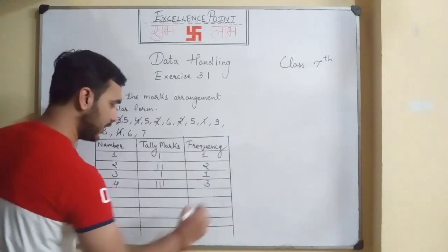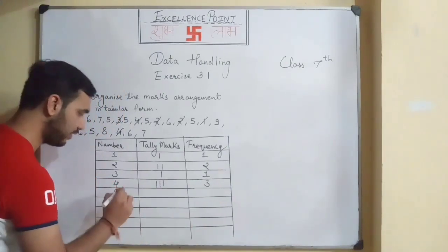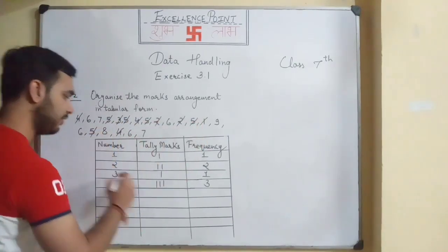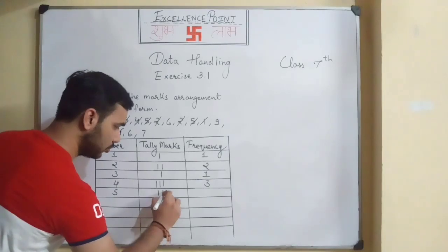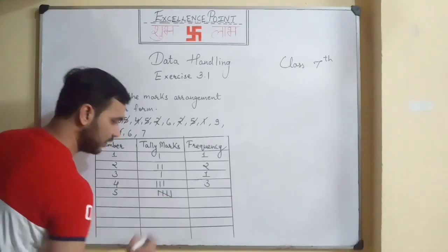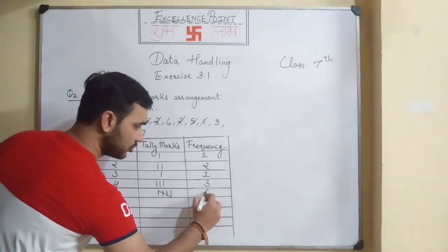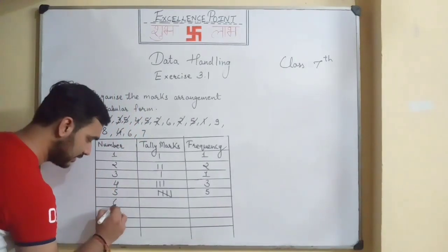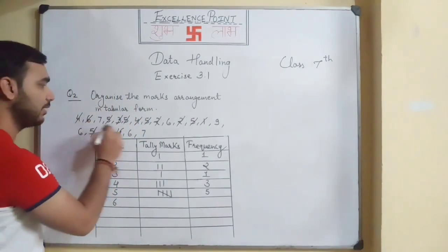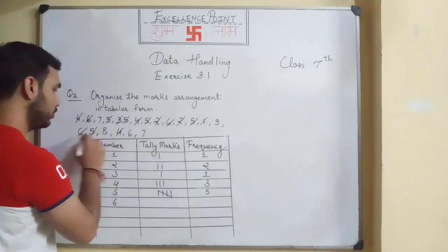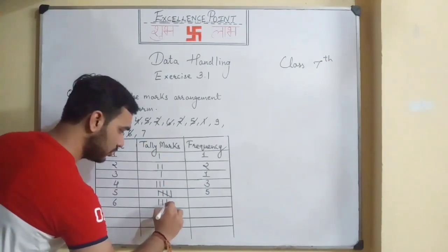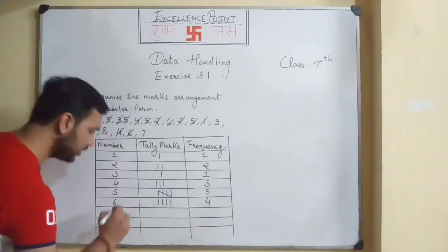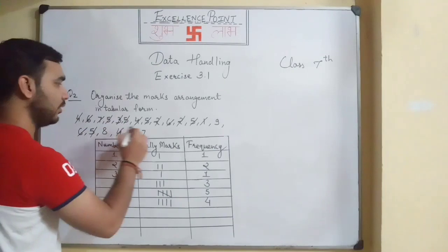Similarly for five, five is occurring one, two, three, four, five times, so we write five tally marks and five in the frequency column. For six, six is occurring one, two, three, four times, so we write four in the frequency column.